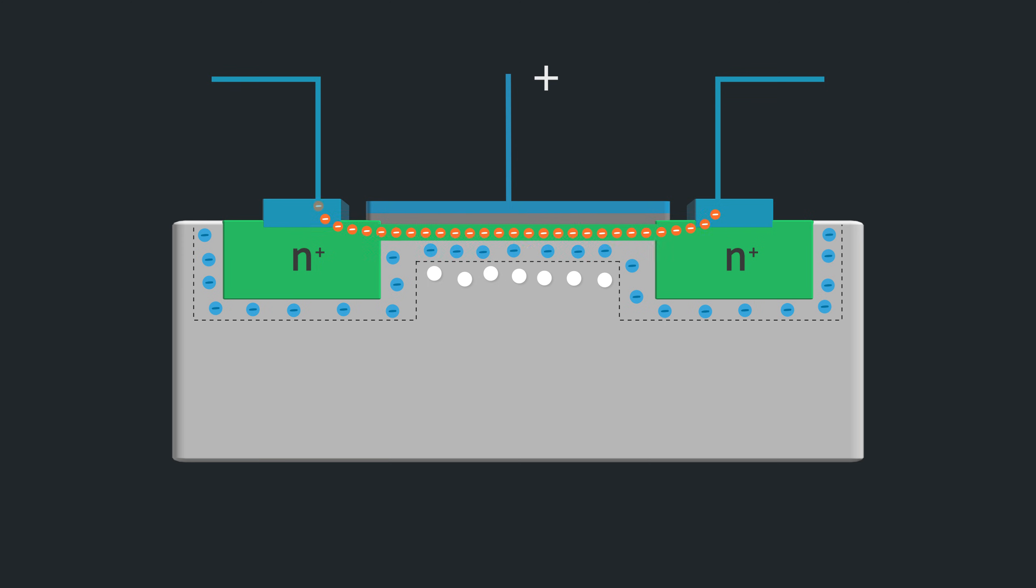The MOSFET is now operating in a linear or triode region. This is how, using a metal oxide semiconductor structure, you can use the field effect of a gate voltage to create a semiconductor switch. And to get a PMOS device, you have an N-type substrate and heavily P-doped wells for your source and drain, and the current carriers are holes instead of electrons.